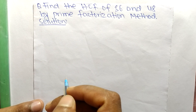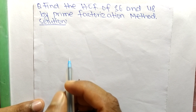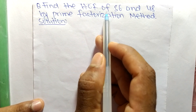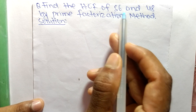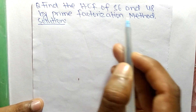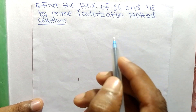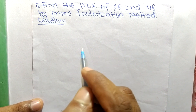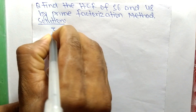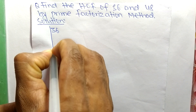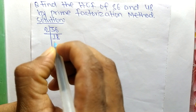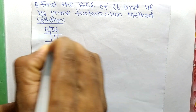Today in this video we shall learn to find the HCF of 36 and 48 by the prime factorization method. First of all we find out the prime factors of 36, so it is 2 times 18 means 36.